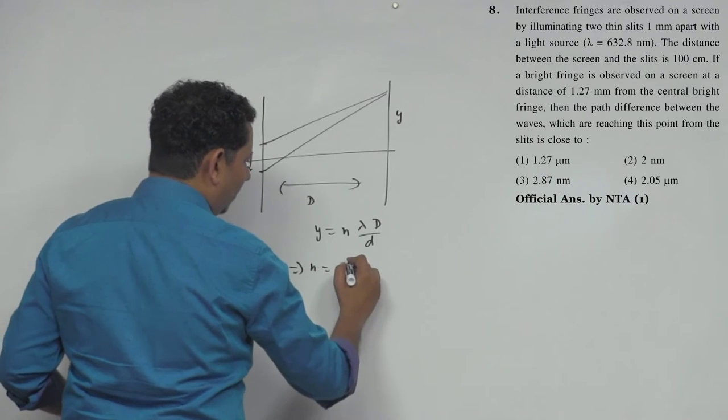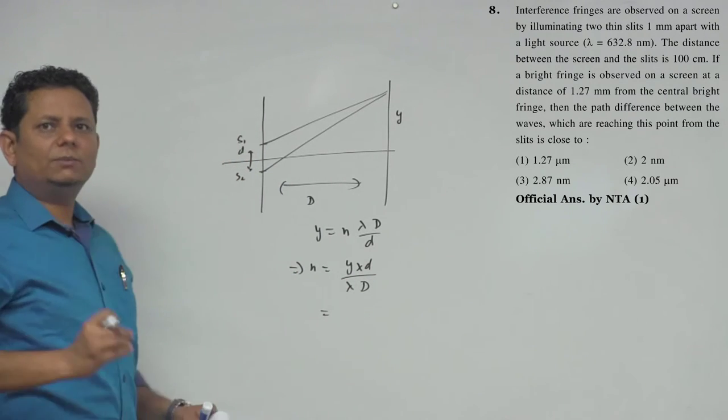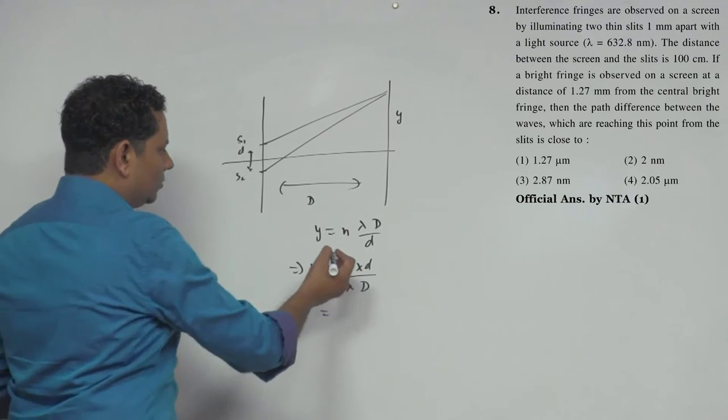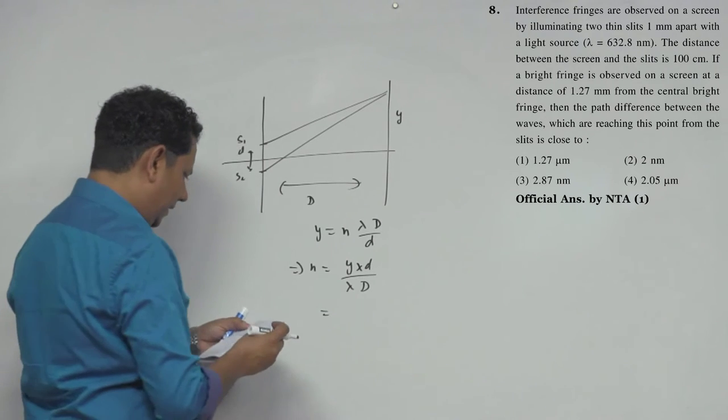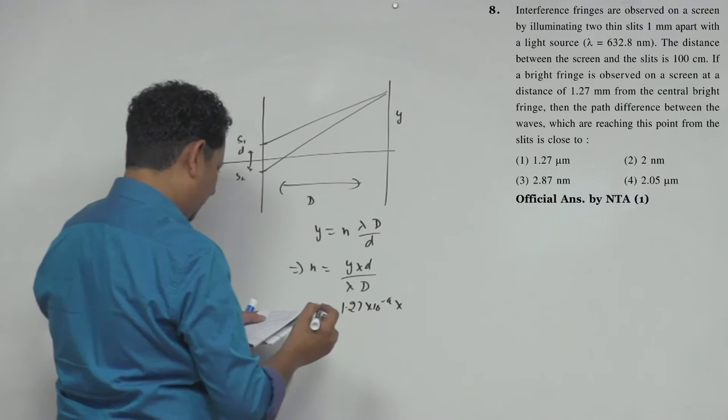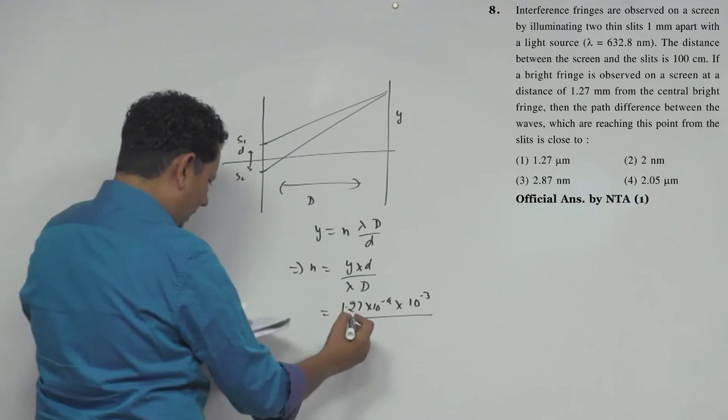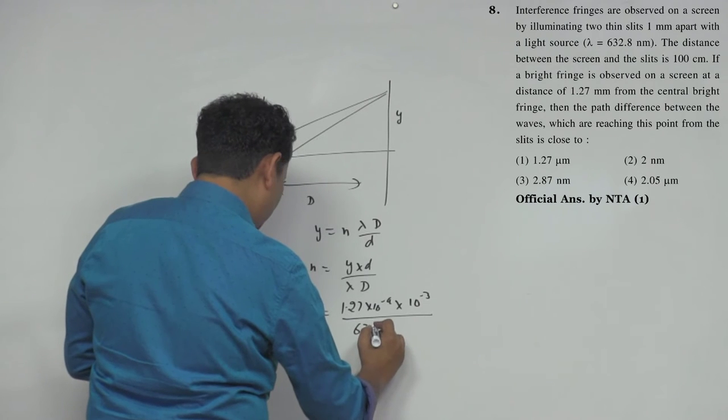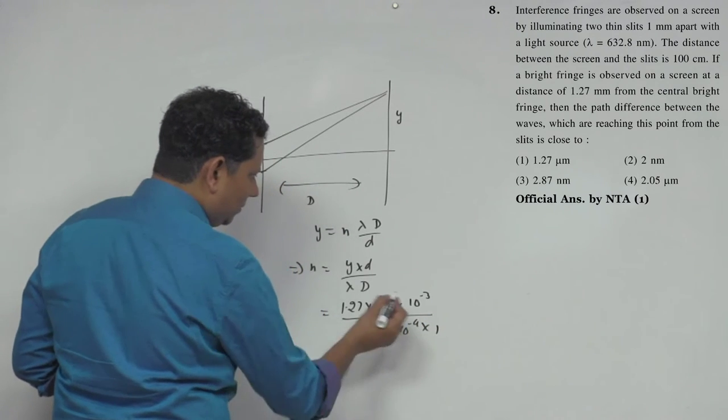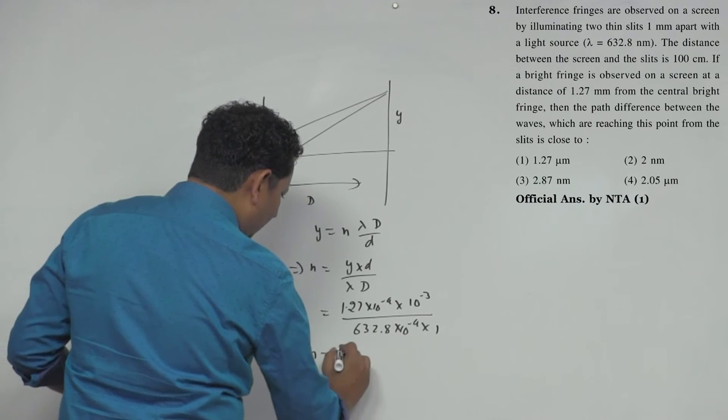Based on this, n will be equal to y multiplied by d divided by lambda D. Now putting values here, we'll get the value of n. From this I'll know which maxima is forming - first, second, third, fourth. Of course it's not the central maxima. So the data given is: y is 1.27 into 10 to the power minus 3, d is 10 to the power minus 3 (that's 1 mm), lambda is 632.8 multiplied by 10 to the power minus 9, and capital D is 1.